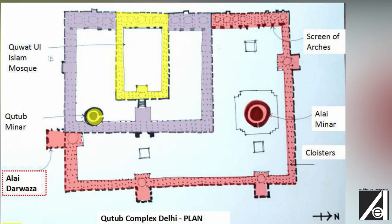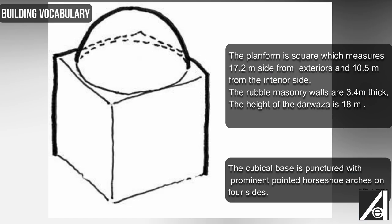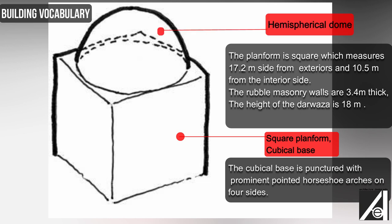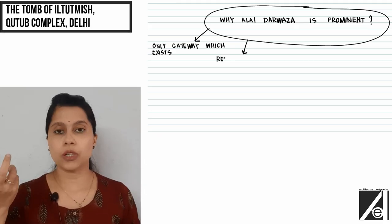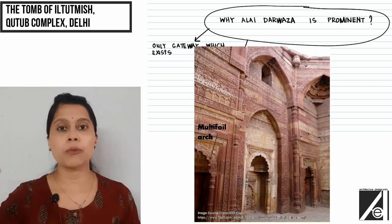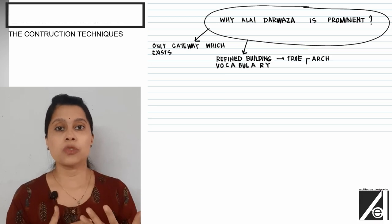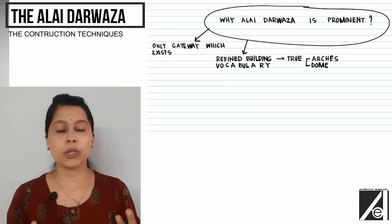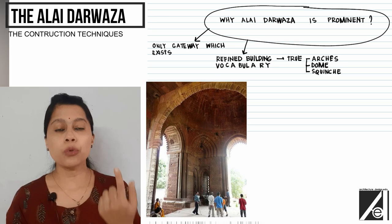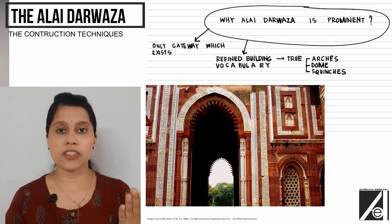The Alai Darwaza is the southern gateway to the Qutb-ul-Islam Mosque complex. In terms of building vocabulary, it consists of a cubical base topped with a hemispherical dome. While Iltutmish's tomb also had arches and a dome, their connection was not very refined. Here, the technique is highly refined — they have used true domes, true squinches, and true arches.